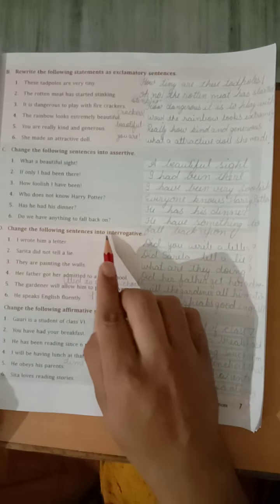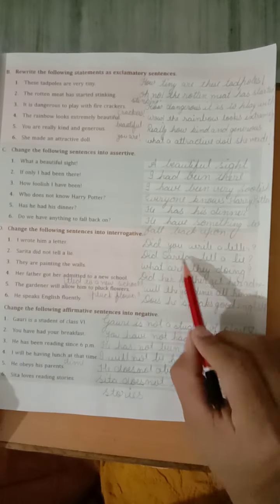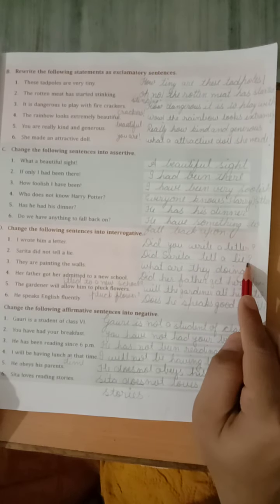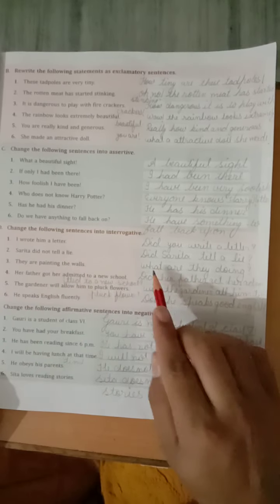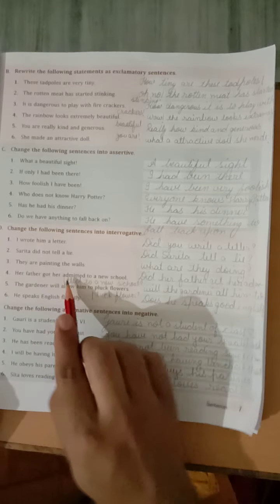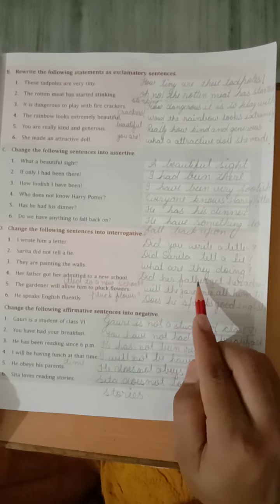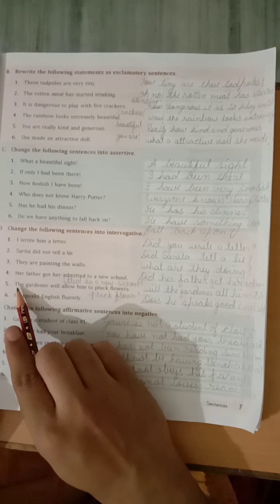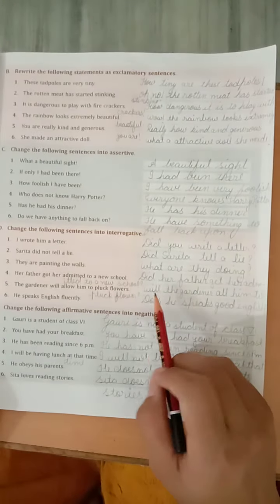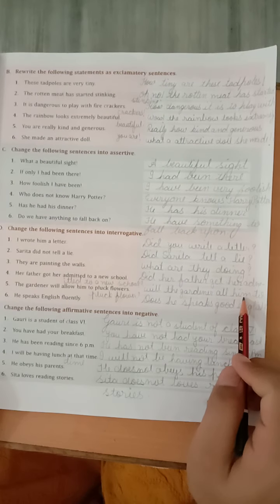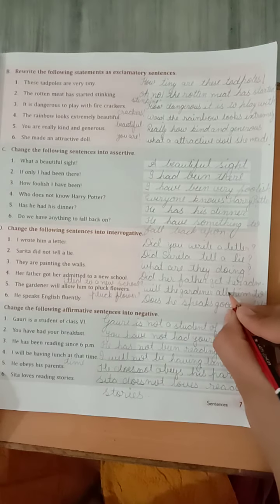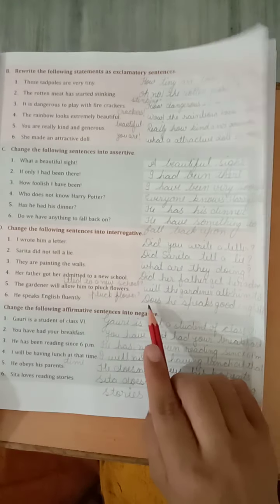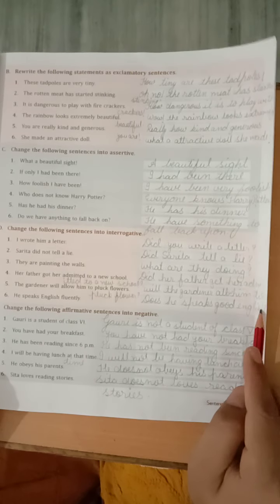Now, D part. Change the following sentences into interrogative. I wrote him a letter. Did you write a letter in question form? Sarita did not tell a lie. Did Sarita tell a lie? They are painting the wall. What are they doing? Her father got her admitted to a new school. Did her father get her admitted to a new school? Question mark. The gardener will allow him to pluck flowers? Will the gardener allow him to pluck flowers? Sixth one. He speaks English fluently. Does he speak good English? Ismein ab likhenge good English. Okay.